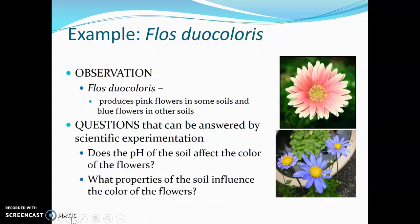So let's run through an example of an experiment on an organism called Flos duocolorus. This is a plant and you might have observed that it produces pink flowers in some soil and blue flowers in other soil. It's the same species of plant, but for some reason some of them are blue and some of them are pink. The questions you need to come up with are ones that can be answered by scientific experimentation — you can't decide that the pink ones are because of unicorns because that's not testable. We need to come up with something that is testable by scientific means.